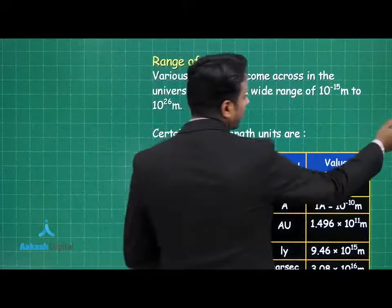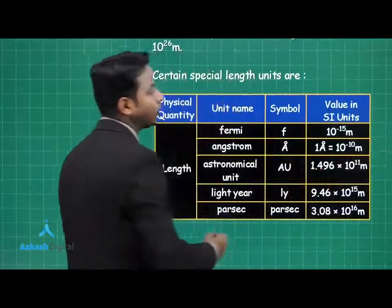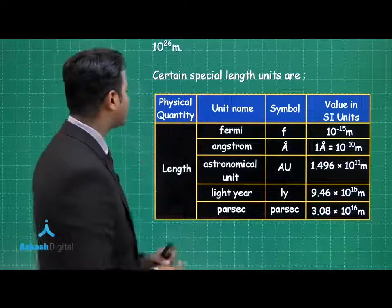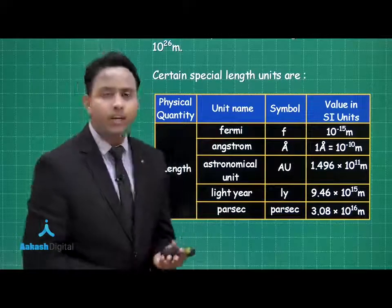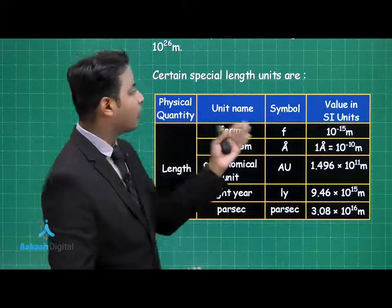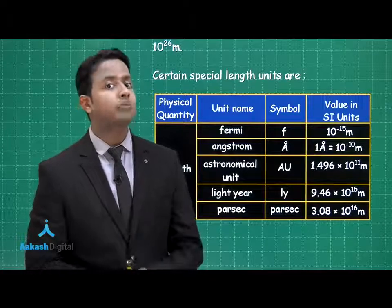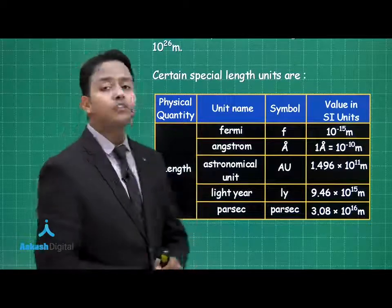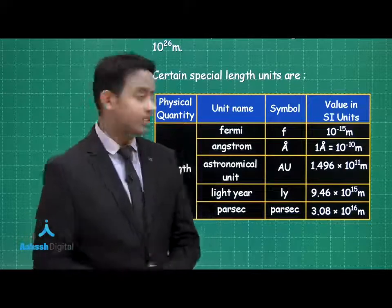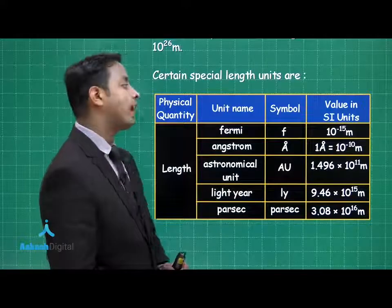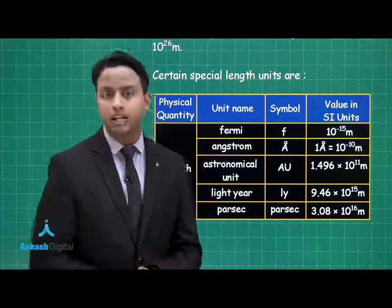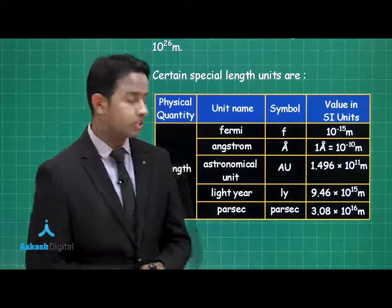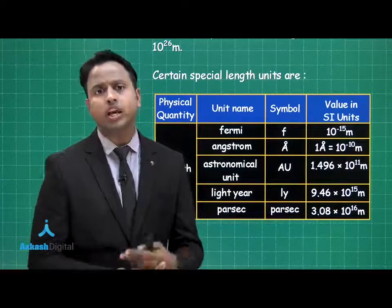Now let's look at special units generally used in physics. The first is the Fermi: one Fermi equals 10 to the power minus 15 meters, which is of the order of the size of a nucleus. The next is the Angstrom: one Angstrom equals 10 to the power minus 10 meters. Angstrom is used only for measurement of distances, unlike Fermi which can be used with other physical quantities.